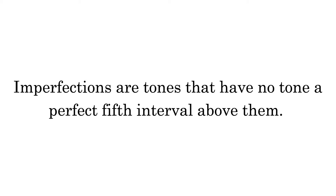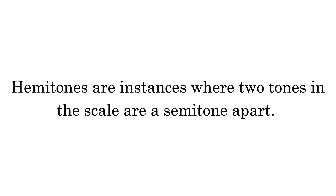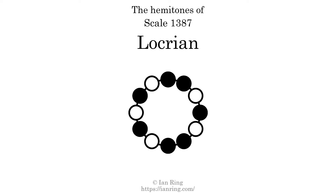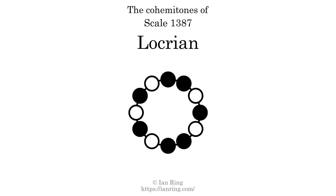Imperfections are tones that have no tone a perfect fifth interval above them. This scale has one imperfection. Hammertones are instances where two tones in the scale are a semitone apart. This scale has two hammertones, here and here. Co-hammertones are instances where two hammertones are beside each other. This scale has no co-hammertones.